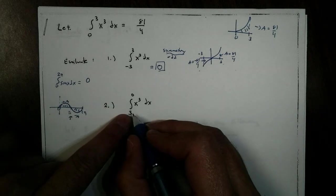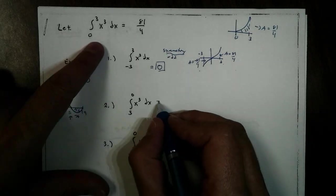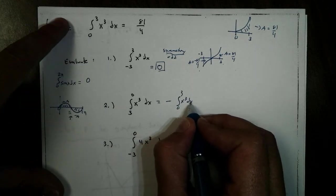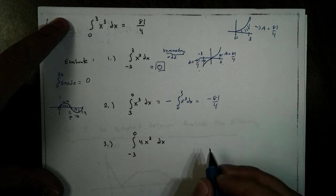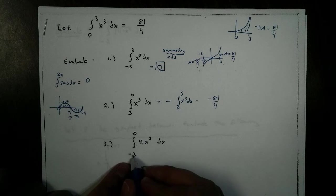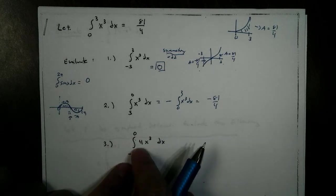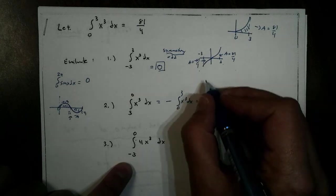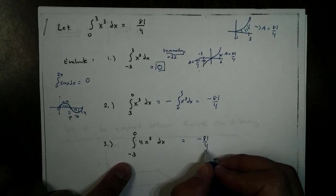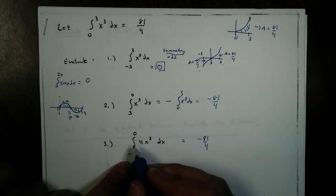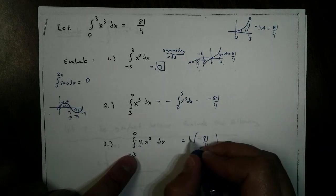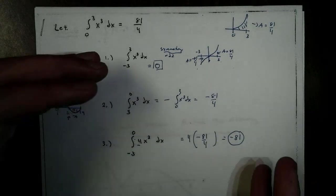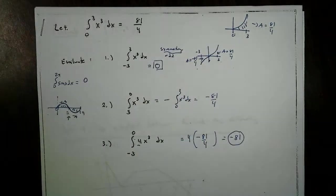All right, the next question says, what about the area from 3 to 0? Well, this is one of our properties. This is going to be negative from 0 to 3 of x cubed dx. So that's going to give me negative 81 over 4. And the next one says, what about negative 3 to 0? Well, again, I'm going to use this symmetry. So I know the area from negative 3 to 0 is going to be negative 81 over 4. We saw that in part 1. We're just going to multiply that by 4 on the outside. And this becomes, of course, negative 81.